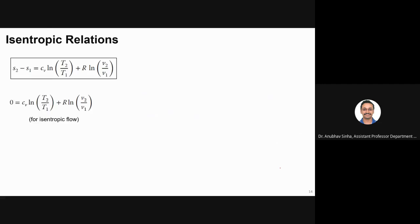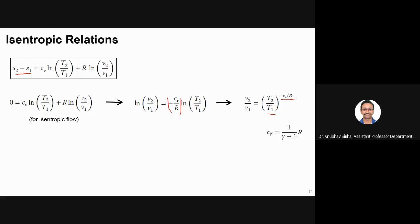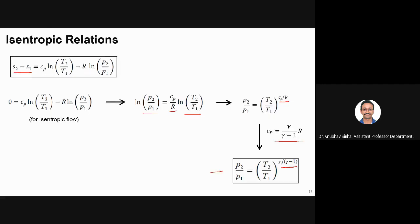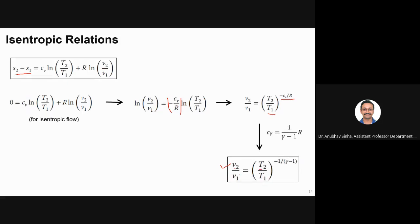Similarly, setting delta S equal to zero for the specific volume equation, we derive V₂/V₁ equals (T₂/T₁) to the power minus Cv/R. Substituting Cv/R equals 1/(gamma minus 1), we get the relation between specific volume and temperature. Since density is the inverse of specific volume, rho₂/rho₁ equals (T₂/T₁) to the power 1/(gamma minus 1). These are the isentropic relations for pressure, specific volume, and density versus temperature.